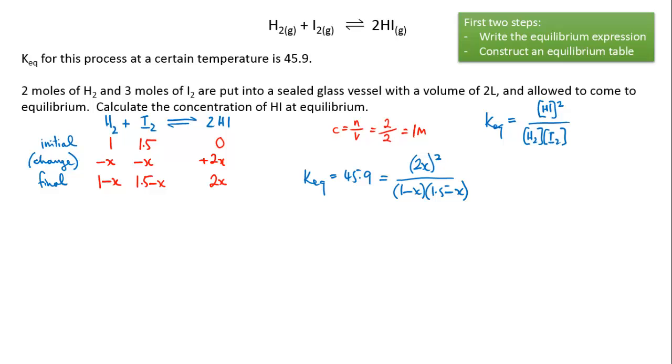What we're going to do now is multiply this out and simplify it, and you'll find that it turns into a quadratic equation. I'm going to bring the bottom of this equation, the 1 minus x times 1.5 minus x, across to the other side and multiply it by 45.9. 2x all squared is 4x squared. I'm going to do a couple of steps to simplify it. It's good algebra practice, but what you should end up with is something that looks like this.